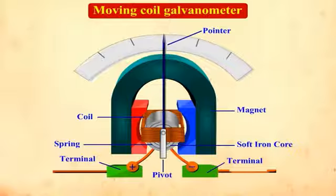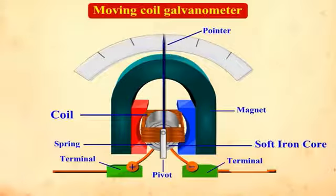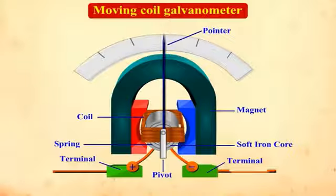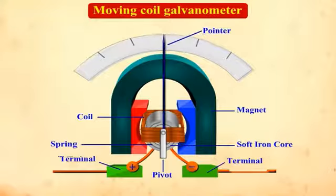It consists of a permanent magnet and a coil wound around a soft iron core. The axis of the core is fixed and attached to a pivot, which is in turn attached to a pointer through a spring.